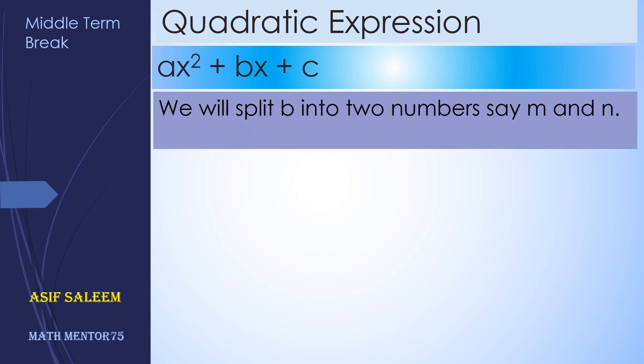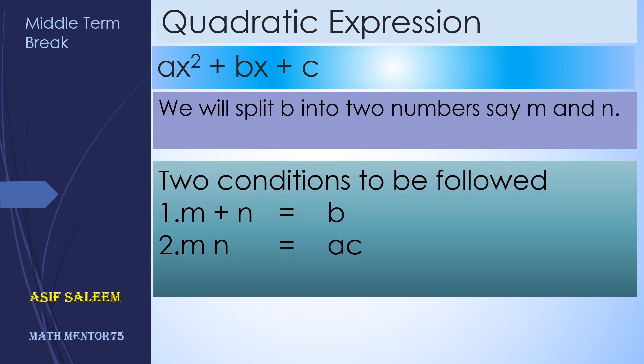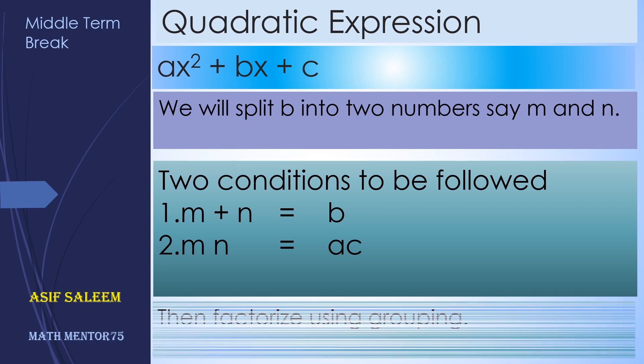Now we have to follow two conditions: these two numbers must sum up to b, and their product must be ac. And after that, we will factorize using grouping.